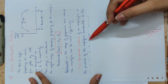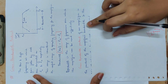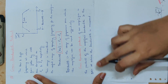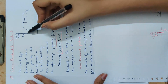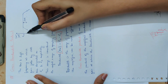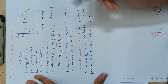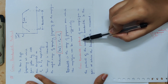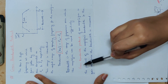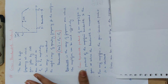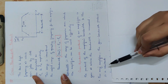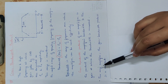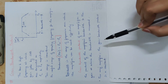The Gain Bandwidth Product is the product of the amplifier's bandwidth and the gain at which that bandwidth is measured. That is the correct definition. For any voltage feedback amplifier, the gain bandwidth product is constant.